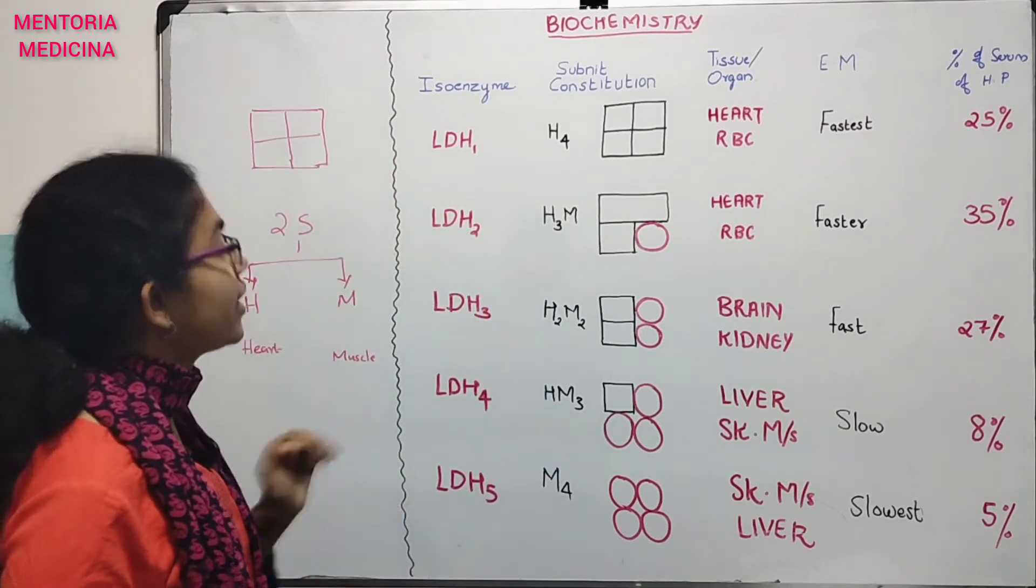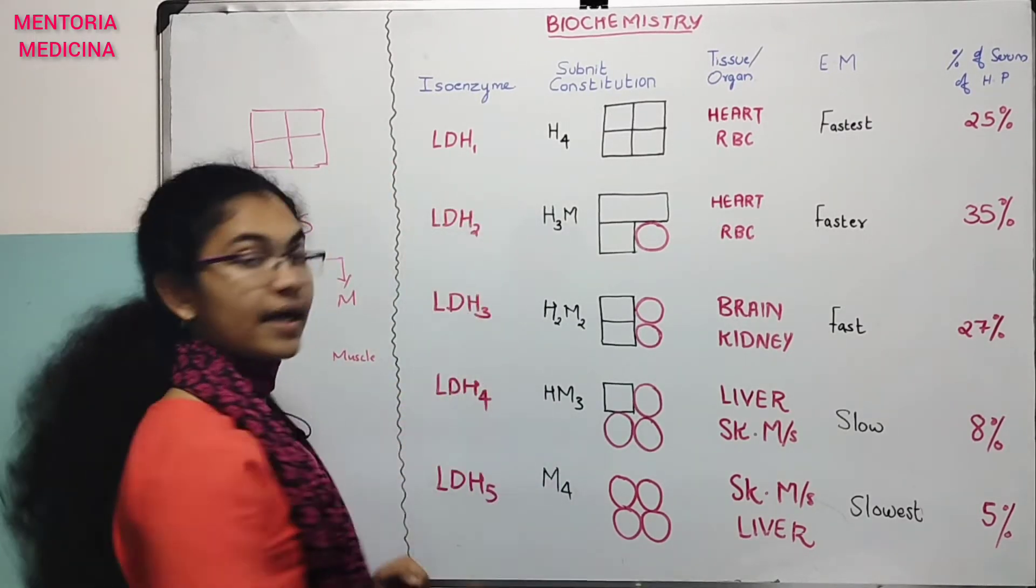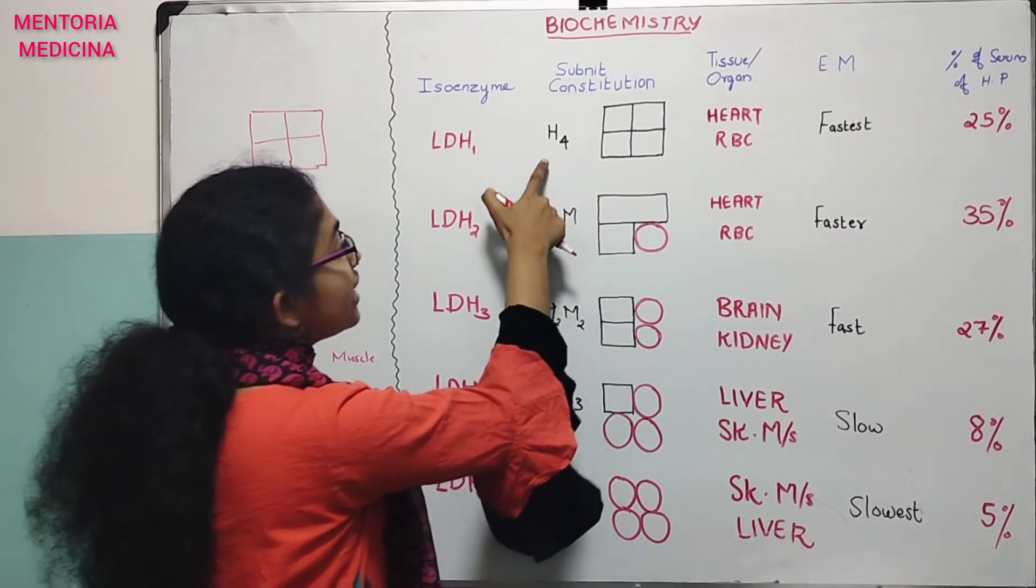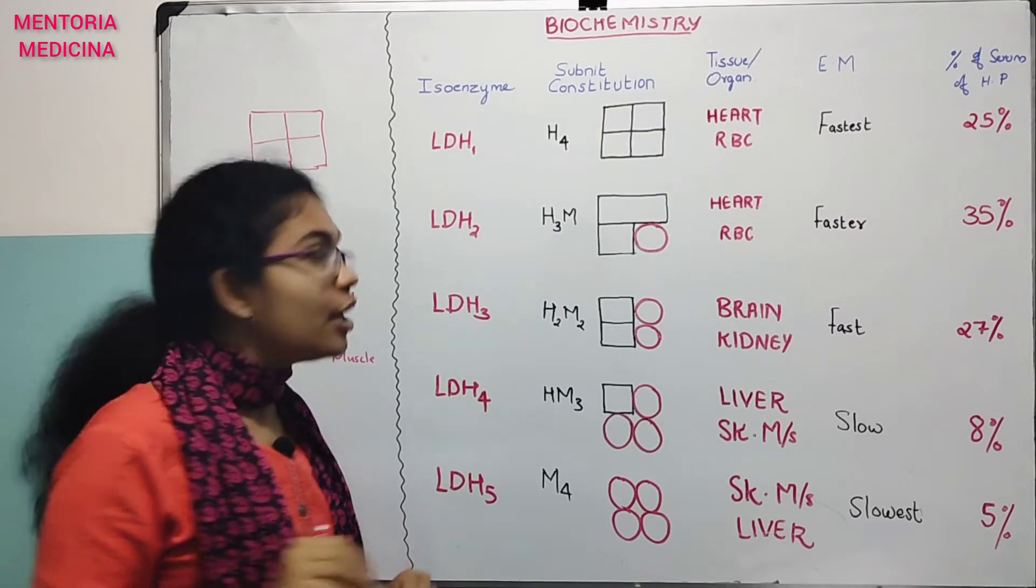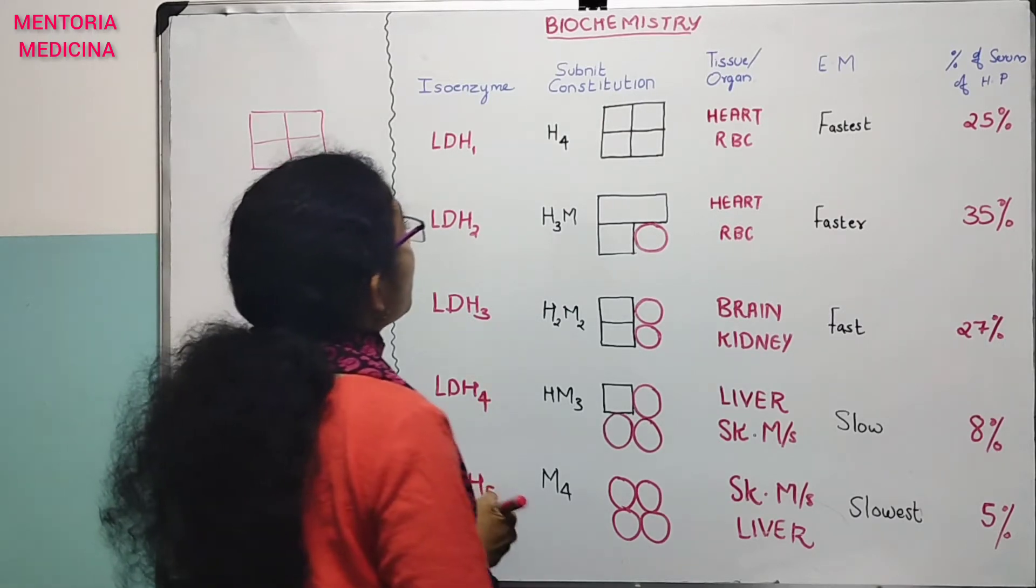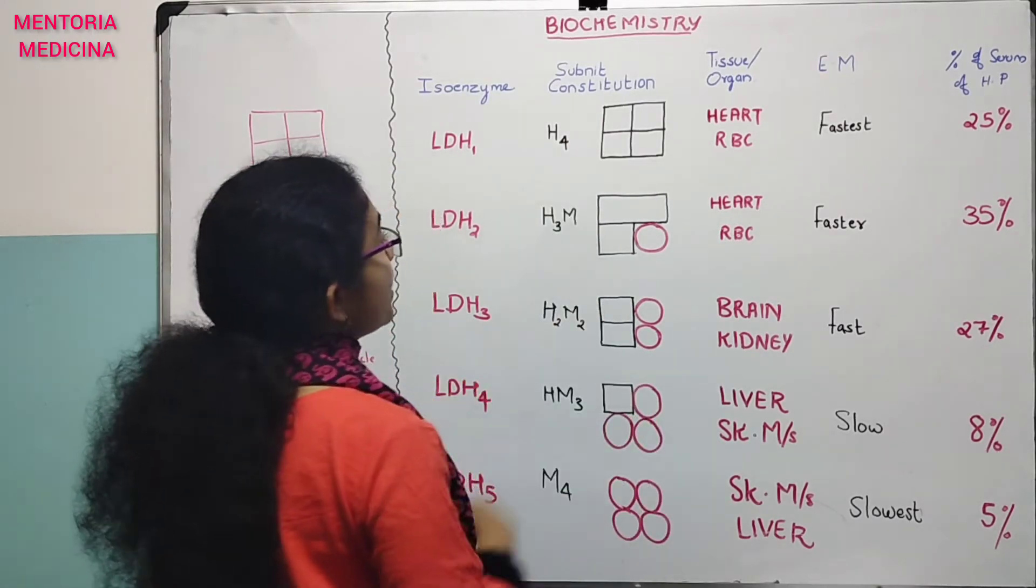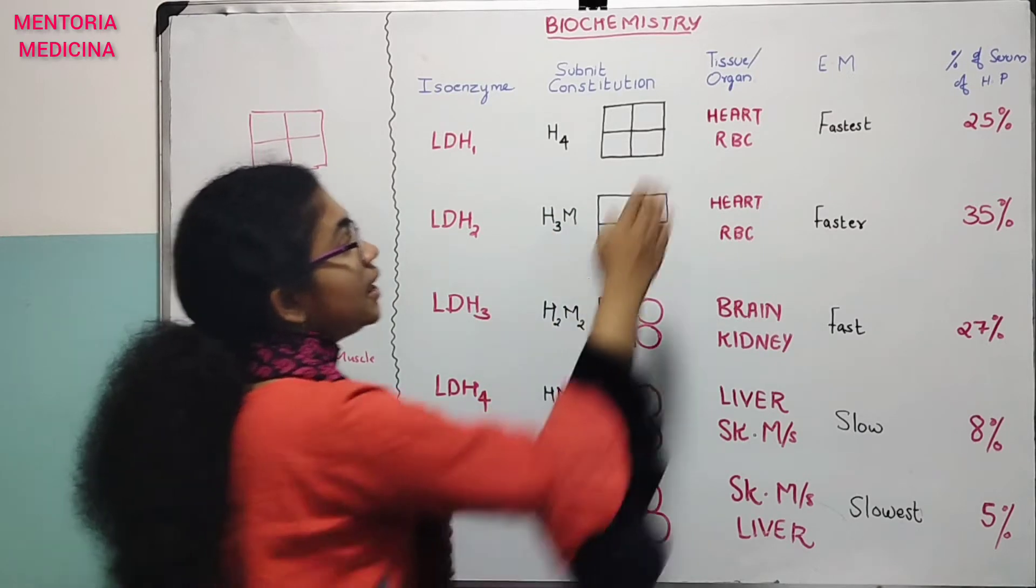This LDH structure is 4 H subunit. Isoenzymes LDH, LDH1 to 5. LDH1 has four H subunits. That is H4.